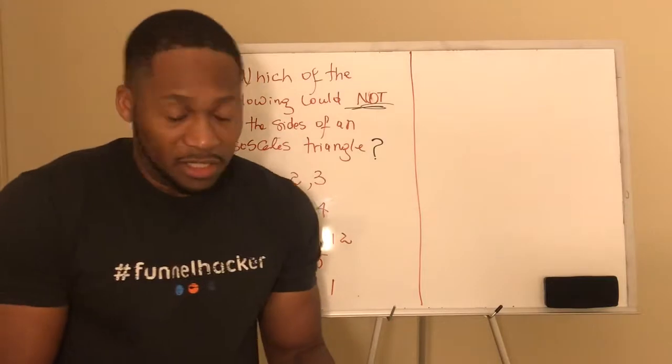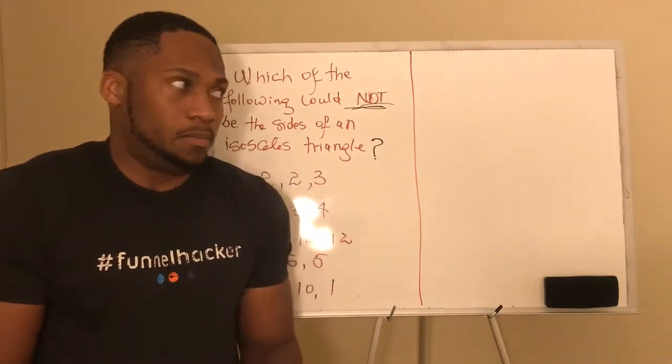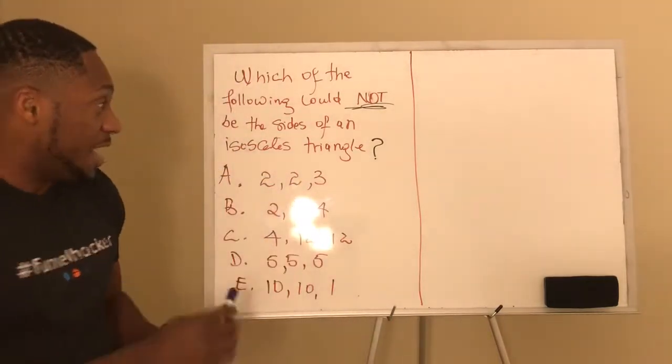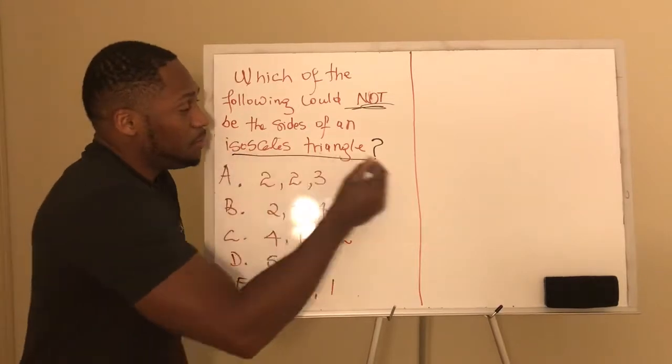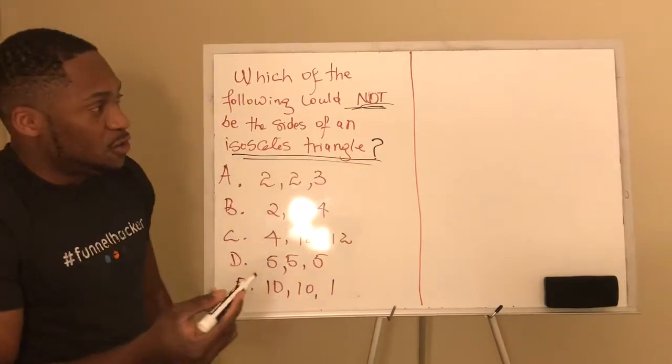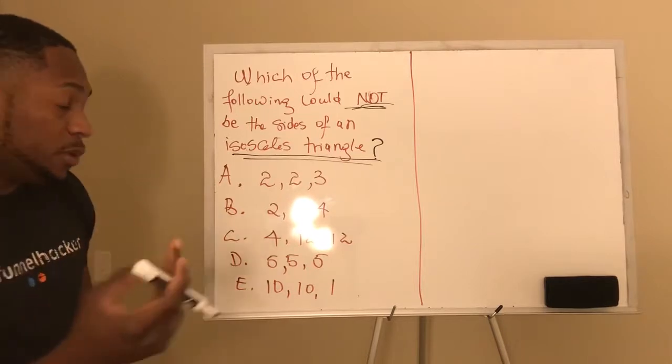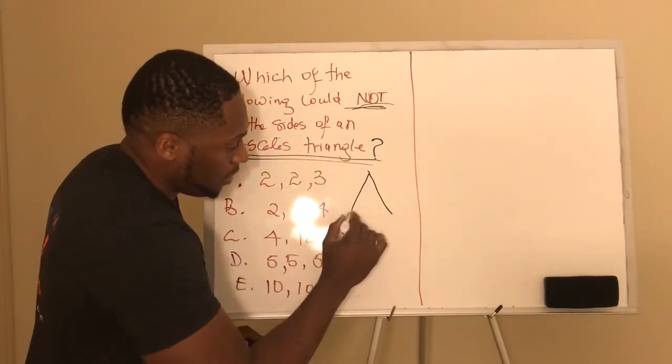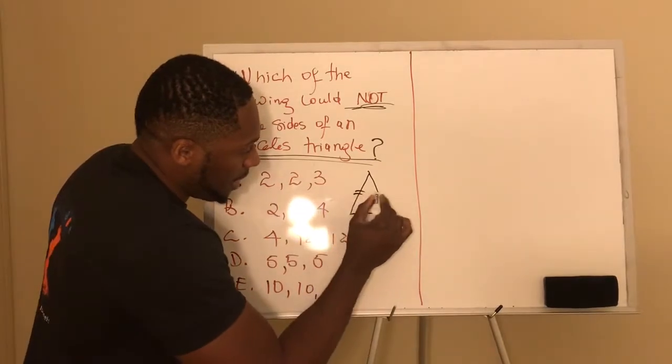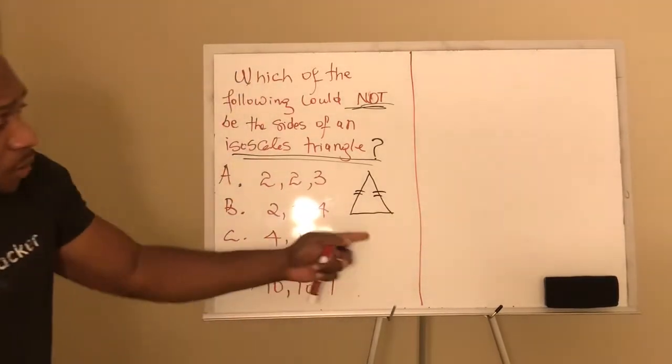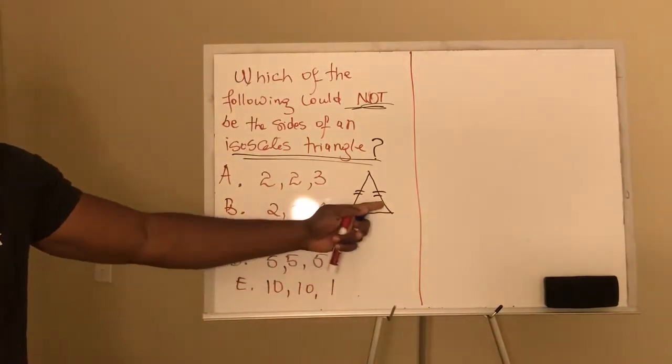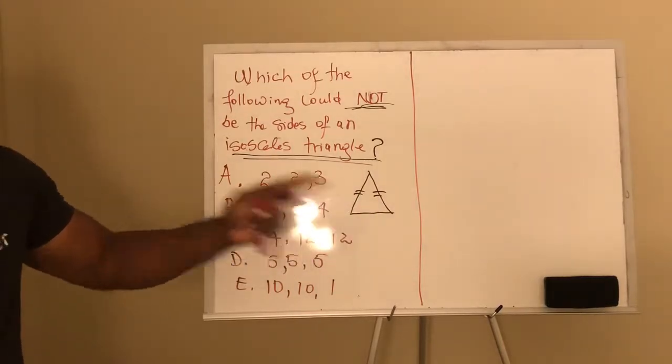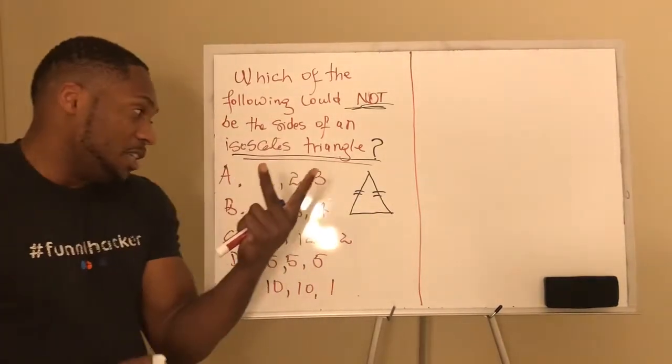The way to solve this is to know the definition of an isosceles triangle. And really what it is, it's a triangle that has at least two sides that are equal to each other. So if you think about a triangle this way, this side is equal to this two side. The third one doesn't have to be equal to these other two, but at least two sides of the triangle need to be equal to each other.